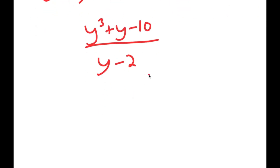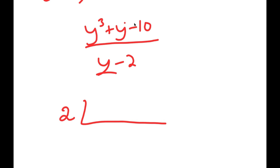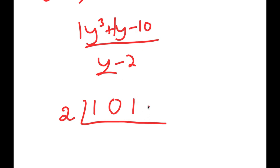The easiest way to do this is by synthetic division. For synthetic division, since y minus 2 and the root is 2, I put 2 on the outside. For my numerator, I focus on the coefficients. These two have a coefficient of 1. But we should also include y squared — since there is no y squared term, that's a 0. Then the coefficient of y to the power of 1 is 1, and finally we have negative 10 at the end.